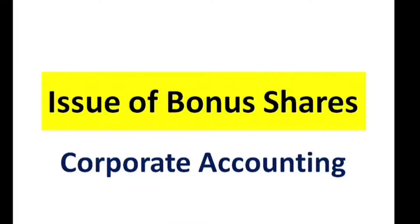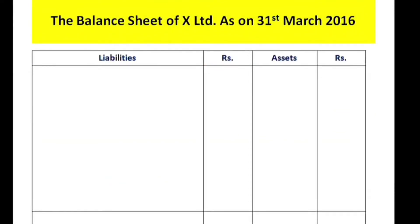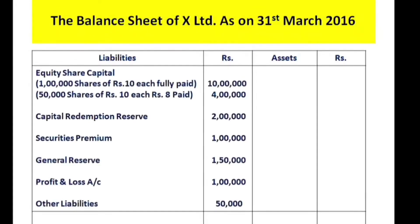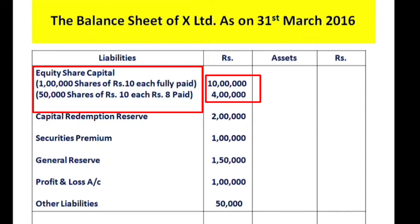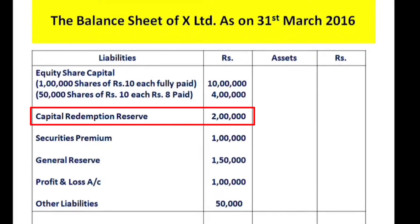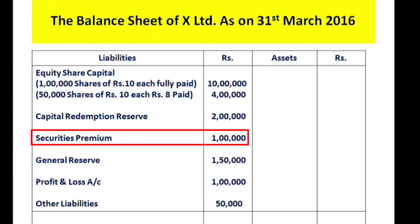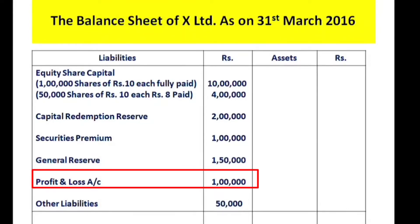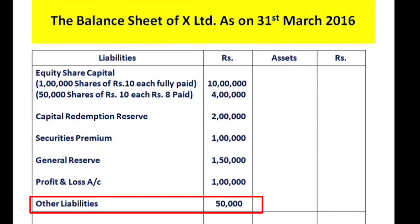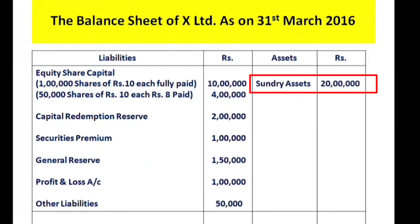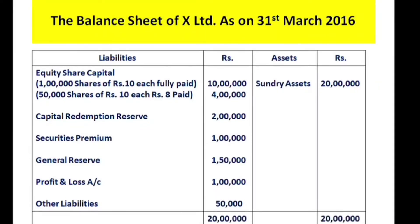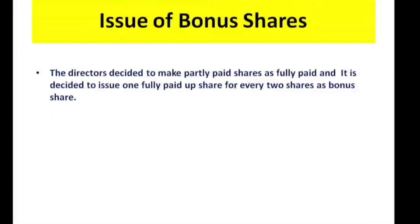Issue of bonus shares — two types. The balance sheet of X Limited as on 31st March 2016: Equity share capital — 1 lakh shares of ₹10 each, fully paid: ₹10 lakhs; 50,000 shares of ₹10 each, ₹8 paid (partly paid): ₹4 lakhs; Capital Redemption Reserve: ₹2 lakhs; Securities Premium: ₹1 lakh; General Reserve: ₹1 lakh 50,000; Profit and Loss Account: ₹1 lakh; Other liabilities: ₹50,000. Total assets: ₹20 lakhs.